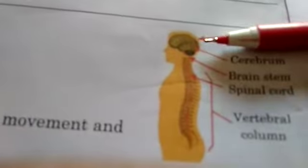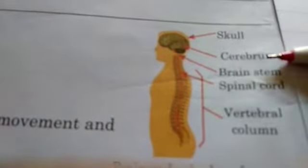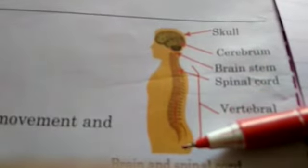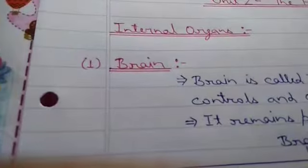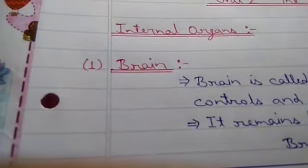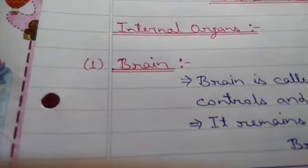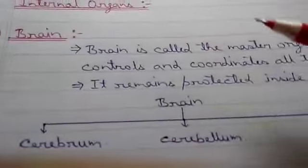The skull contains the three parts: cerebrum, brainstem, and the connection to the spinal cord. The spinal cord is also called the vertebral column. So we have studied two important organs: the brain and the spinal cord.